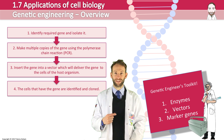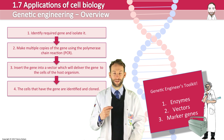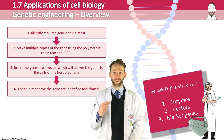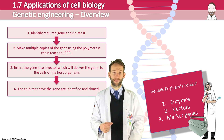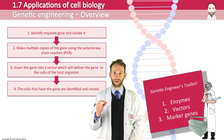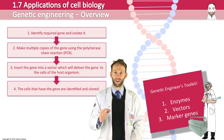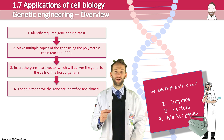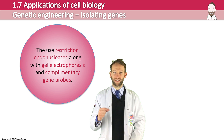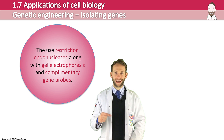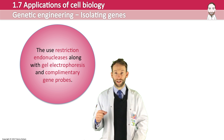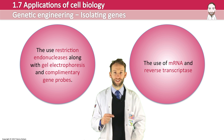The first step in carrying out genetic engineering is to isolate the desired gene from the genome of the gene donor. This can be hard as less than 2% of DNA actually codes for protein — the rest is non-coding. We've got to find that specific part of a gene which codes for the polypeptide we're interested in. We will look at two methods: using restriction endonucleases along with gel electrophoresis and complementary gene probes, or using mRNA and reverse transcriptase.